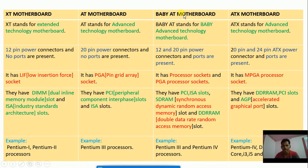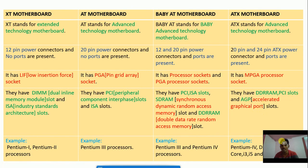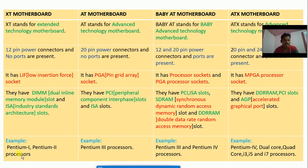The Baby AT motherboard has PCI slots, ISA slots, SDRAM slots (Synchronous Dynamic Random Access Memory), and DDR RAM slots (Double Data Rate Random Access Memory). The ATX motherboard has DDR RAM slots, Peripheral Component Interface slots, and AGP (Accelerated Graphics Port) slots.